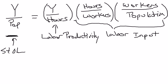The other two variables combined are the labor input. You have the number of hours each worker works per year, and the number of workers in the population. You can increase labor input one of two ways: you can have more people work — fewer retirees, lower the working age, that type of thing — or you can have workers simply work more hours.